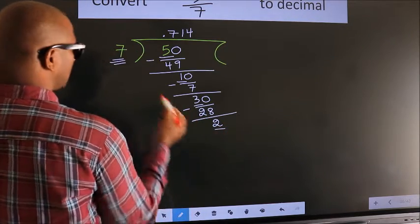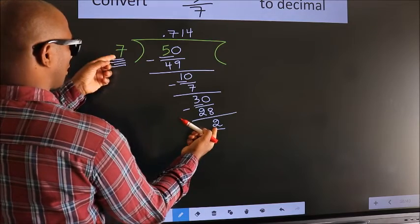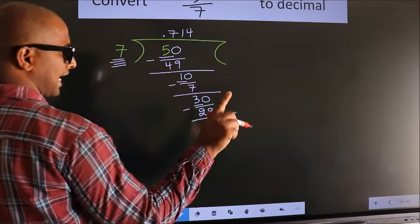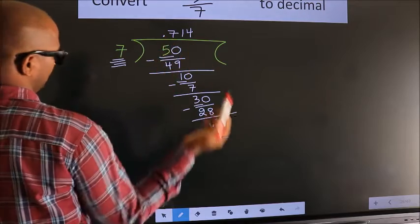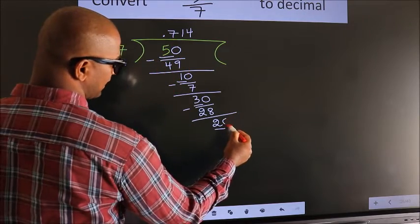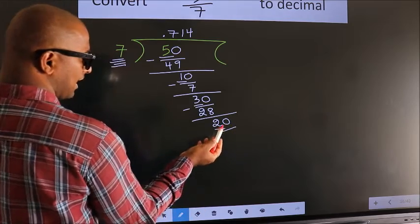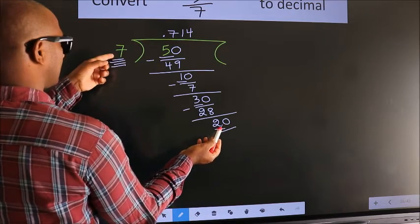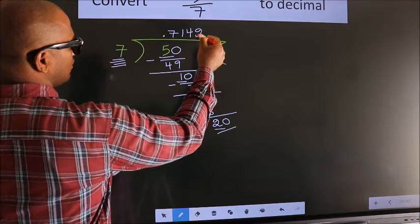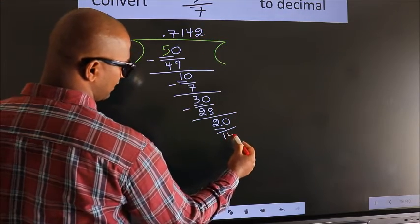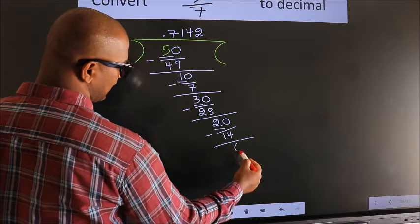Here we have 2, here 7. 2 is smaller than 7. And we already have the decimal, so we can directly take 0. So, 20. A number close to 20 in the 7 times table is 7 twos: 14. Now we subtract. We get 6.